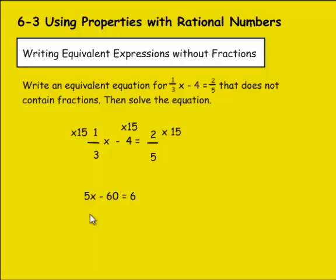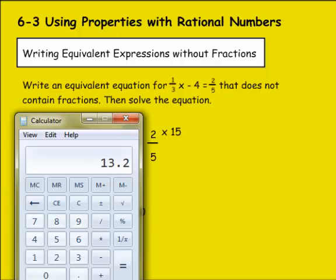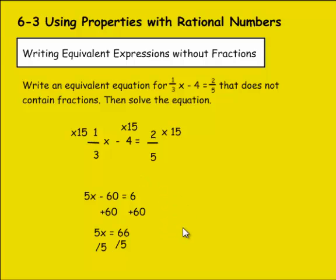And there you have it. We have this new equation, which is exactly like the previous one, except no fractions. This is going to be pretty easy. I add 60 to both sides because we're subtracting. That gives me 5x equals 66. Divide both sides by 5. 66 divided by 5 is 13.2. So 13.2 would equal x, and that would be my answer.